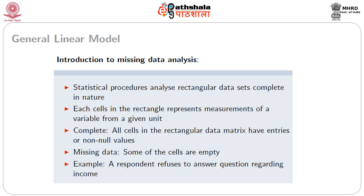By complete we mean that all cells in the rectangular data matrix have entries or non-null values. Missing data happens when some of the cells do not have a value or are not observed. Take for example a very simple economic survey where a respondent answers all questions but refuses to answer questions regarding income. So if that row of the respondent has 10 questions to be answered, all are answered except the one asking about income, and that cell is blank.